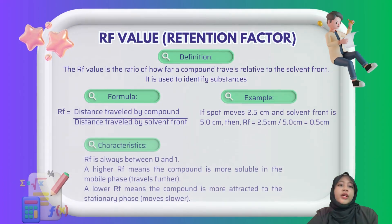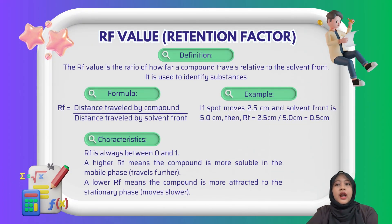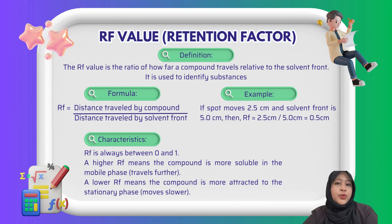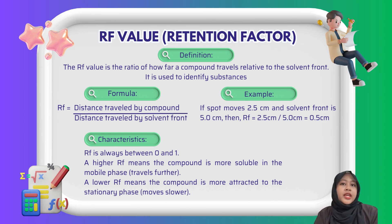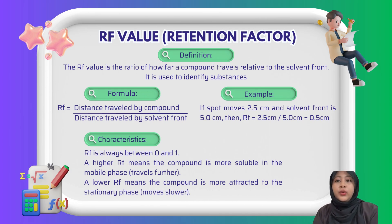Let's look at what the RF value actually tells us. The RF value, or retention factor, is a ratio that helps us figure out how far a compound travels compared to the solvent in chromatography. It's very useful for identifying different substances in a mixture. To calculate the retention factor, it equals the distance traveled by the compound divided by the distance traveled by the solvent front.